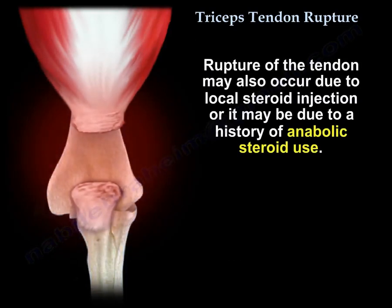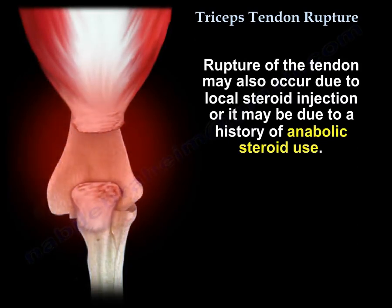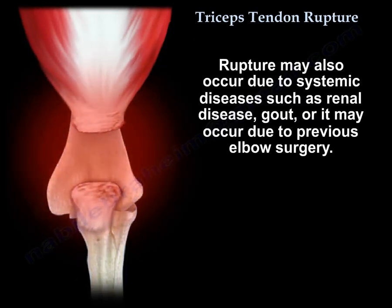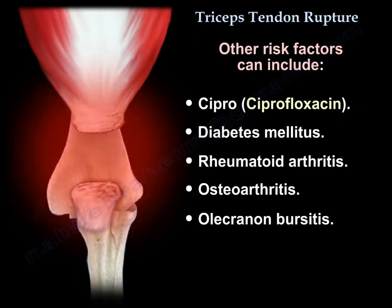Rupture of the tendon may also occur due to local steroid injection or a history of anabolic steroid use. The rupture may also occur due to systemic diseases such as renal disease, gout, or previous elbow surgery. Other risk factors include fluoroquinolone use, diabetes mellitus, rheumatoid arthritis, osteoarthritis, and olecranon bursitis.